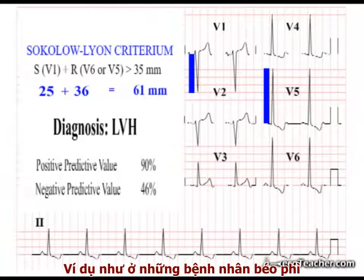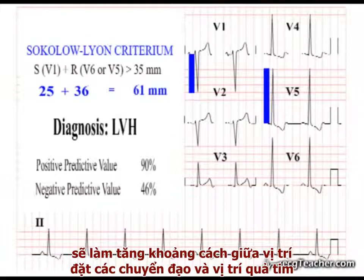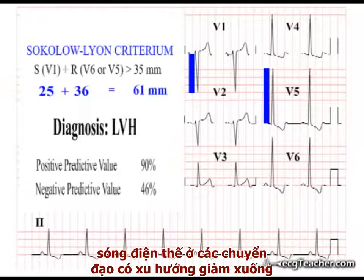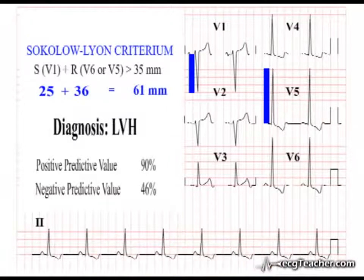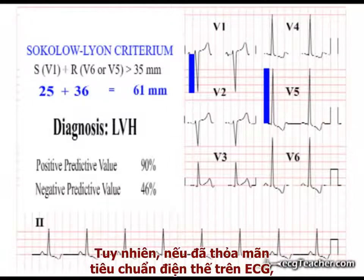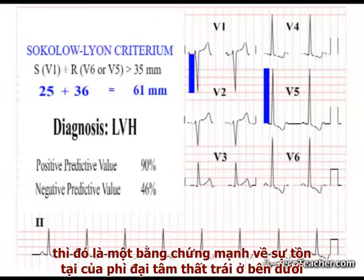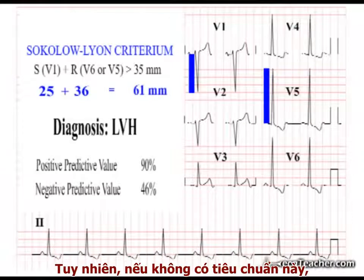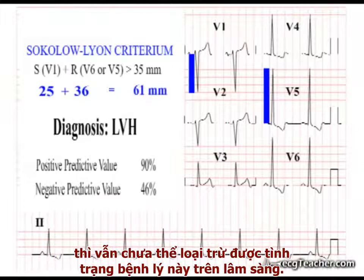For example, in obese individuals, the increased distance of the leads from the heart tends to dampen down the amplitude of the deflections produced. Basically, if the voltage criteria are present on the ECG, this is strong evidence of underlying LVH. However, if they are not, this does not reliably rule out hypertrophy.